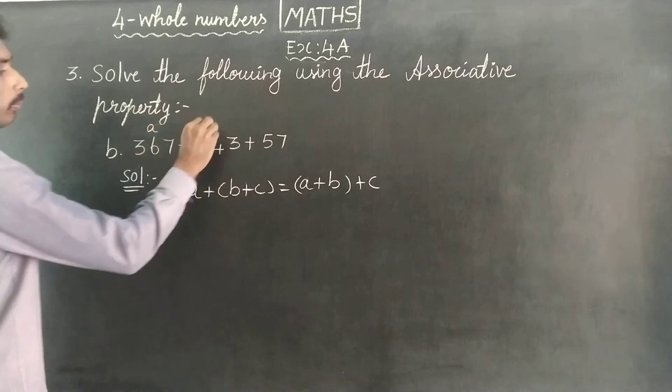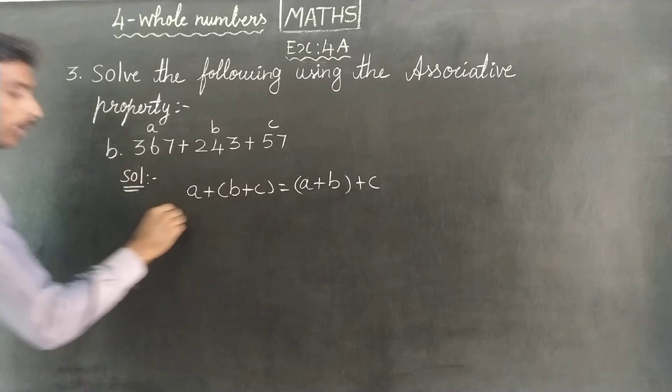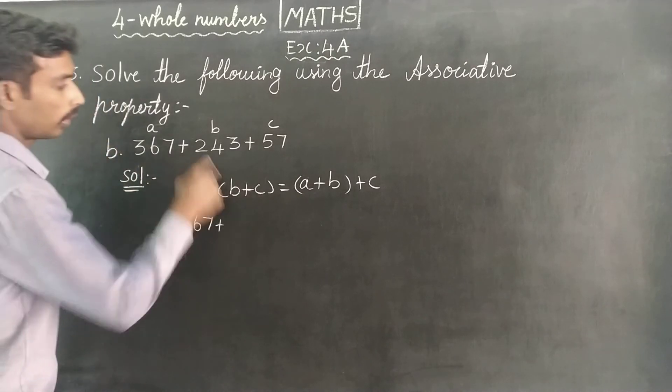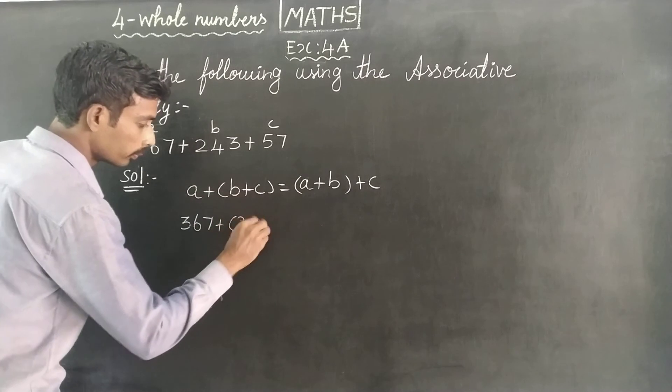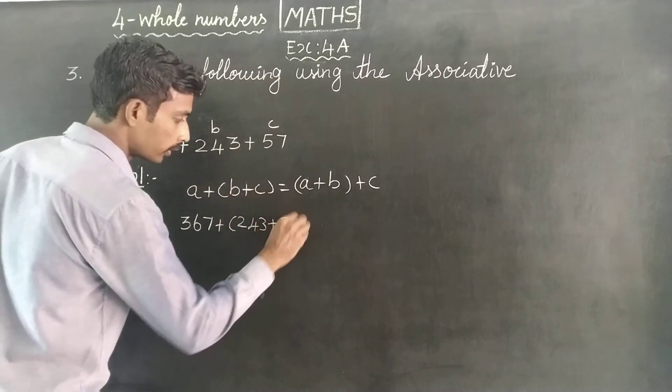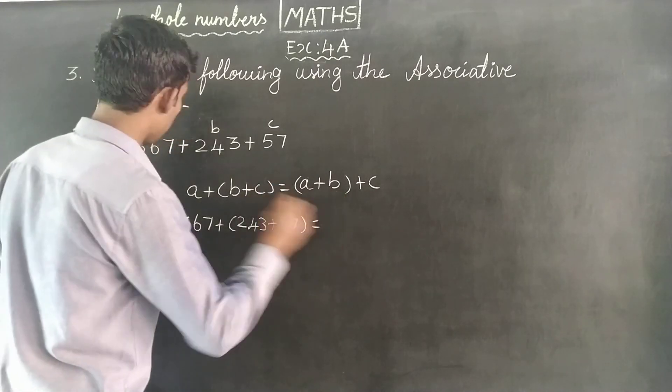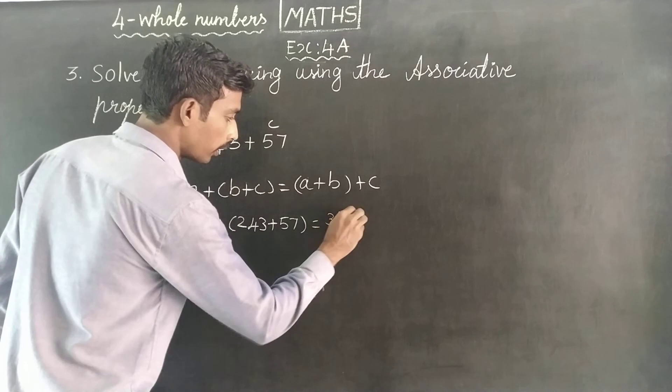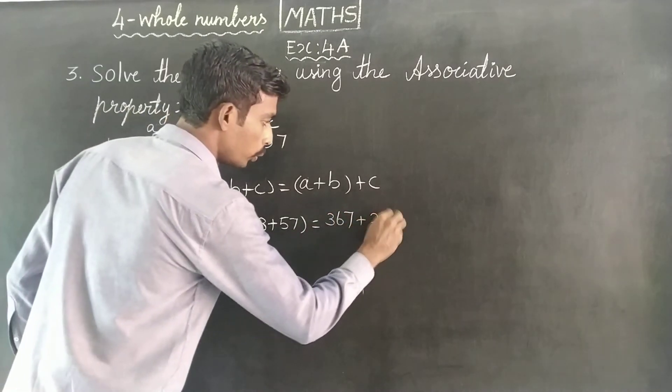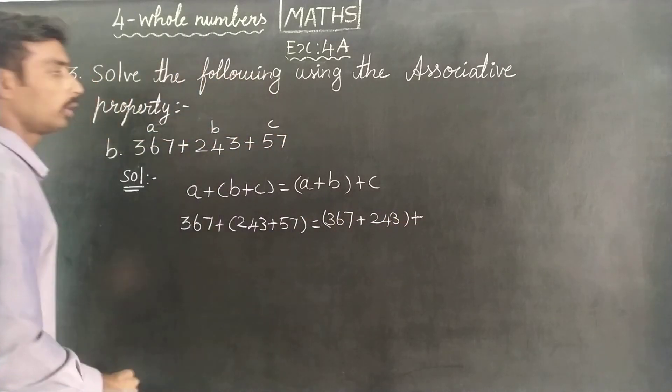This shows A value, B value, and C value. So A is 367, B is 243, and C is 57. Therefore 367 plus bracket 243 plus 57 close bracket equals bracket 367 plus 243 close bracket plus 57.